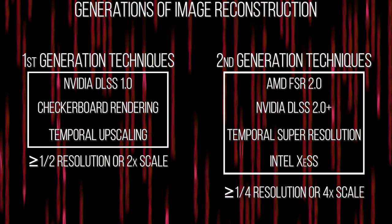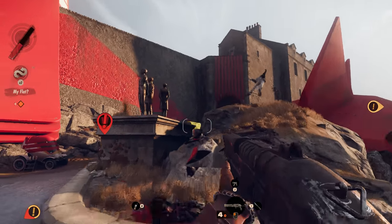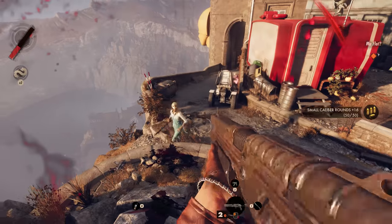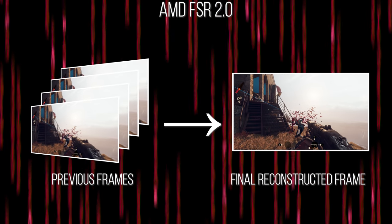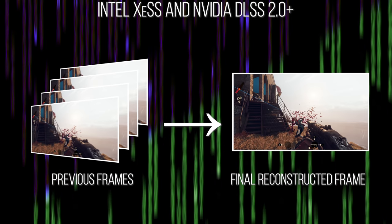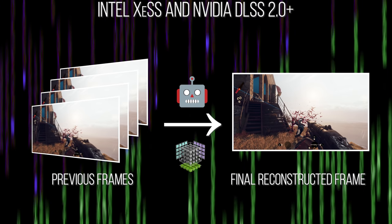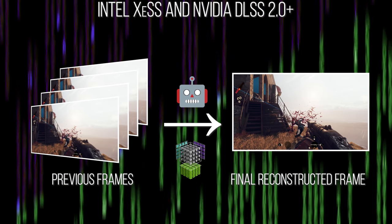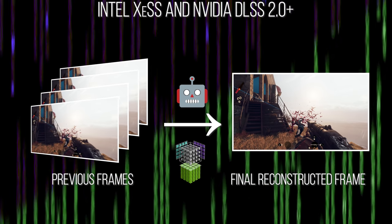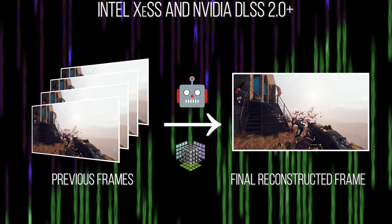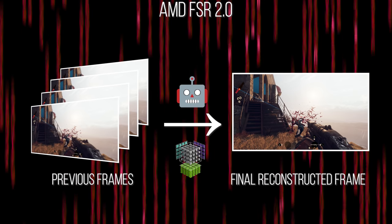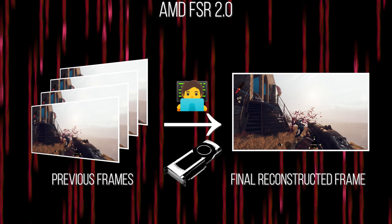To do this, FSR 2.0, like Epic's TSR, relies fully on a hand-tuned temporal accumulation technique. A lower resolution image without anti-aliasing is jittered, and information from a number of these frames is reprojected over time into the current frame to build up a higher resolution image. While XeSS and DLSS 2.0 and above utilize machine learning and a lot of compute enabled by specialized hardware units like tensor cores or XMX units to fit this previous frame information into the current frame, FSR 2.0 uses less computational time and standard compute units with a human hand-tuned heuristic.